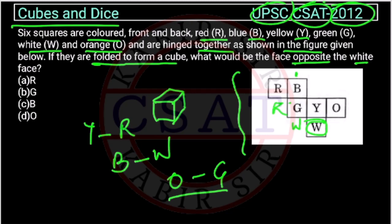So one way is to imagine like you are folding it. The other way is that the alternate faces will be opposite to each other. These are the alternates: O and G will be opposite to each other, right.